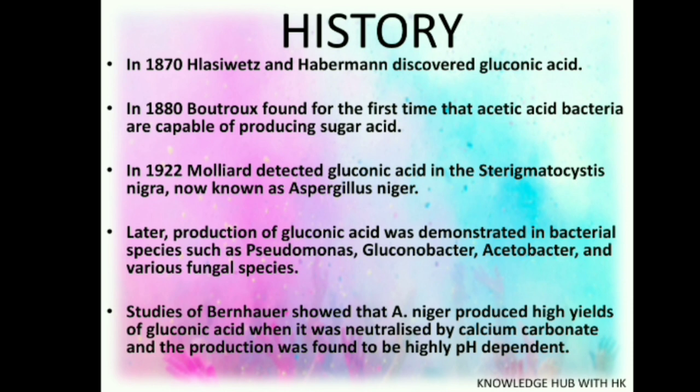Later, production of gluconic acid was demonstrated in bacterial species such as Pseudomonas, Gluconobacter, Acetobacter, and various fungal species. Studies of Brannhaar showed that Aspergillus niger produces high yield of gluconic acid when it was neutralized by calcium carbonate, and the production was found to be highly pH dependent. However, it is found that Penicillium species' pH dependence is not as critical when compared to Aspergillus niger.